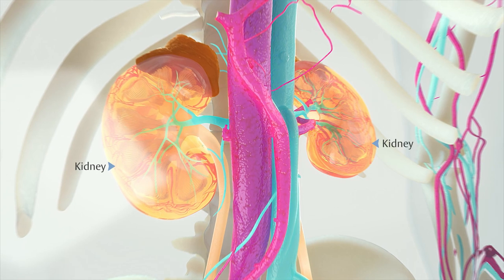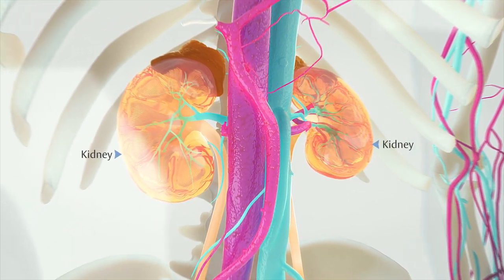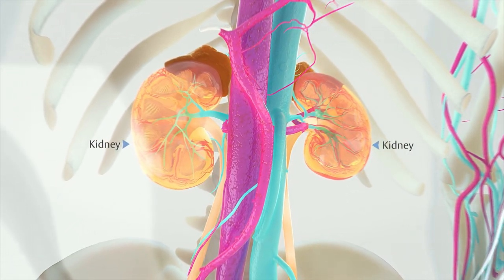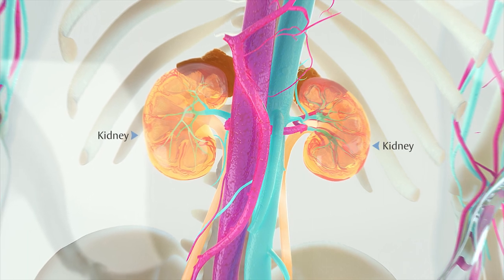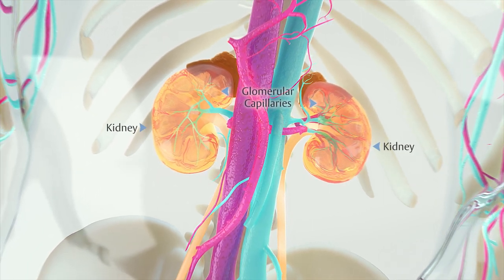The kidneys are highly perfused organs that effectively and rapidly remove waste molecules and excess fluid. Filtration occurs within glomerular capillaries and forms urine.